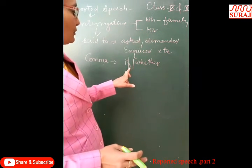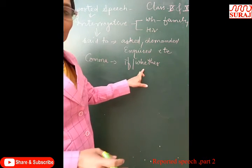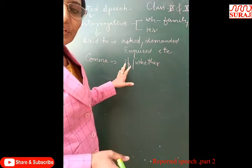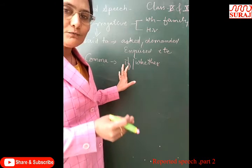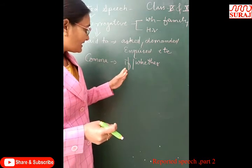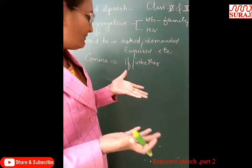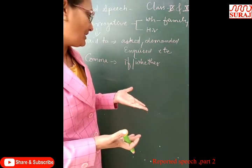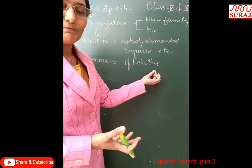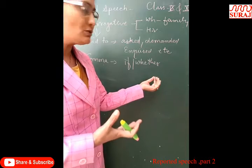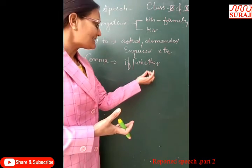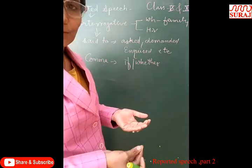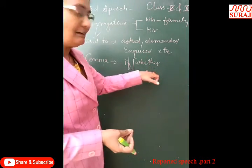But whenever the sentence starts with an auxiliary verb or helping verb, then we use 'if' or 'whether' in place of the comma. Generally we use 'if' because it is shorter. However, 'whether' is also appropriate because it implies both 'if' and 'if not' — both senses are implied in 'whether.'